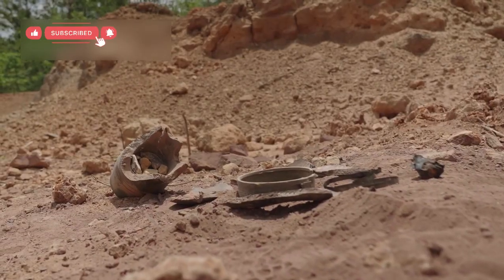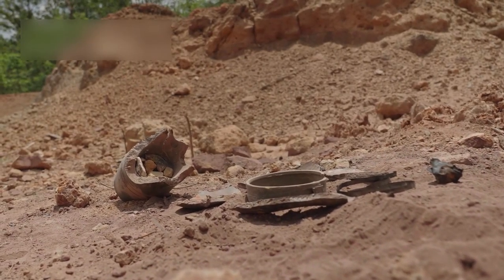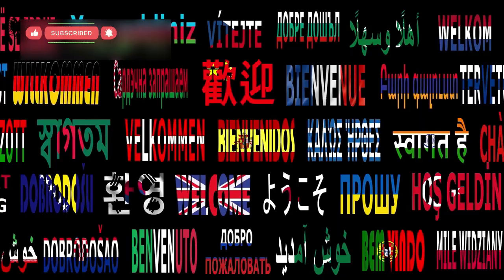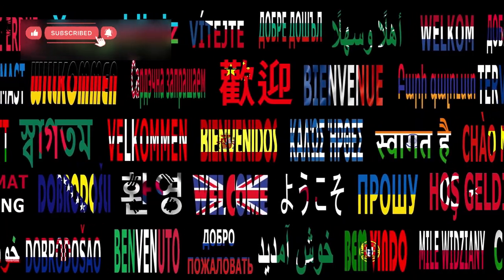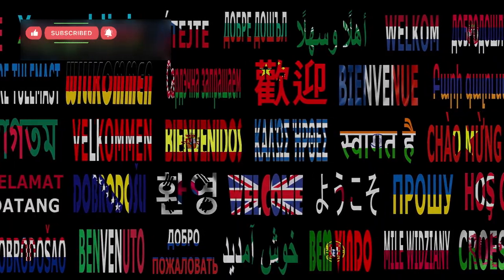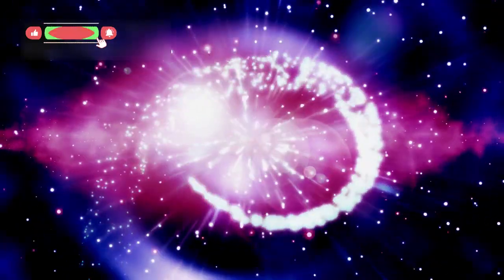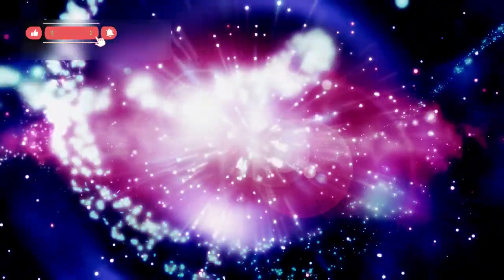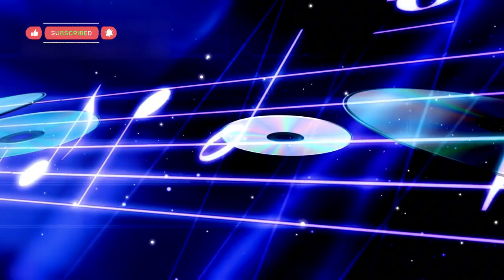Voyager also carries a priceless cultural artifact, the Golden Record. Created under the guidance of Carl Sagan, it includes greetings in 55 languages, sounds like oceans and birds, and music from Beethoven to Chuck Berry. It acts as a cosmic time capsule, carrying a message of peace to any life that may someday find it.